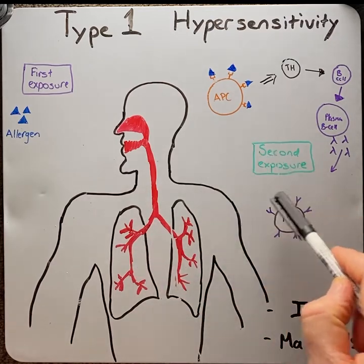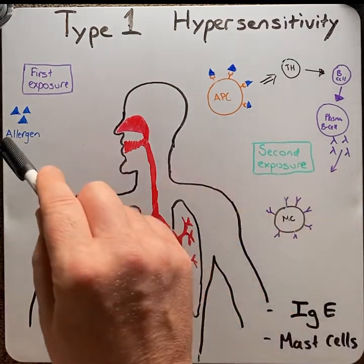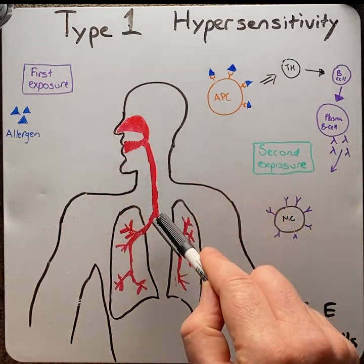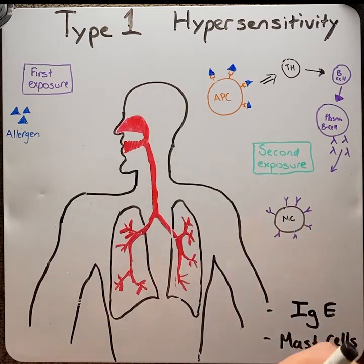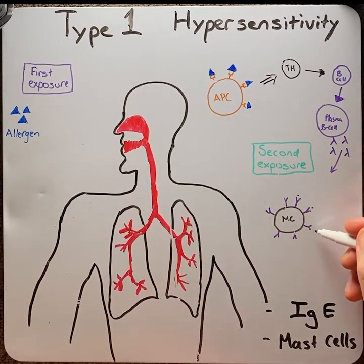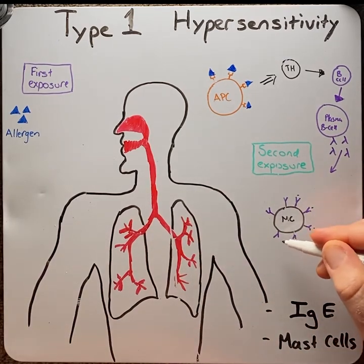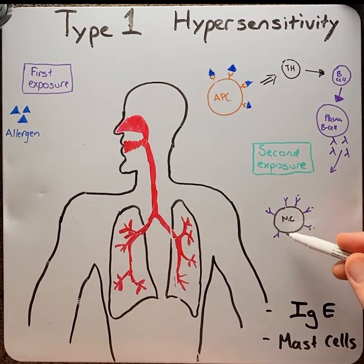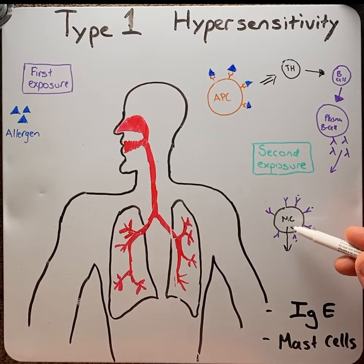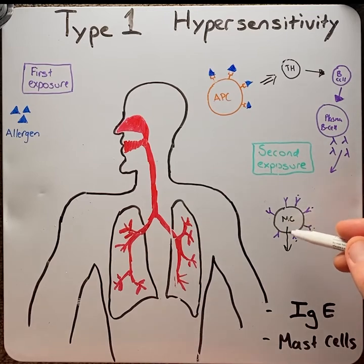On second exposure, the pollen comes in, travels down the airway, and binds to the antibodies. This causes the mast cells to release their granules — a process called degranulation. These granules contain histamines.